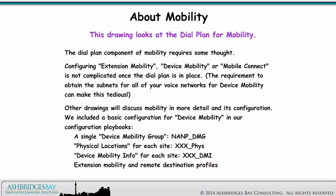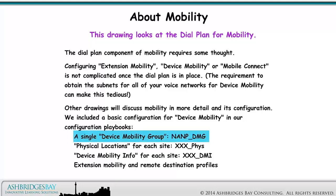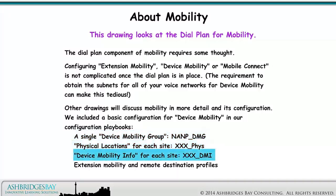This drawing looks at the dial plan for mobility. The dial plan component of mobility requires some thought. Configuring extension mobility, device mobility, or mobile connect is not complicated once the dial plan is in place. We included a basic configuration for device mobility in our configuration playbooks: a single device mobility group, an ANP DMG, physical locations for each site (XXX PHYS), device mobility info for each site (XXX DMI), and extension mobility and remote destination profiles.